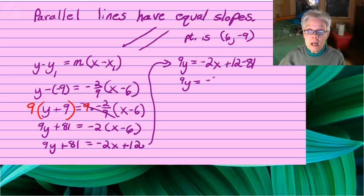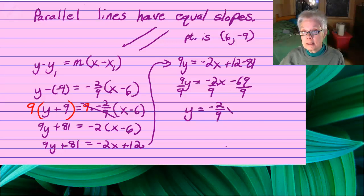So 9y equals negative 2x plus 12 minus 81. That means that 9y equals negative 2x minus 69. Now, I'll divide by 9, divide by 9, divide by 9.